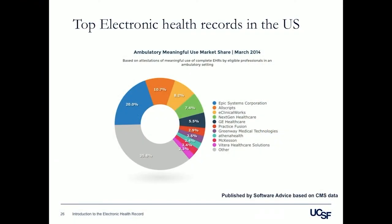Here's a brief overview of the most commonly used electronic health records. UCSF largely uses Epic. There's also AllScripts and eClinicalWorks, along with a large number of other vendors. We think this landscape will continue to evolve over time, but you should have a basic sense of the major players.